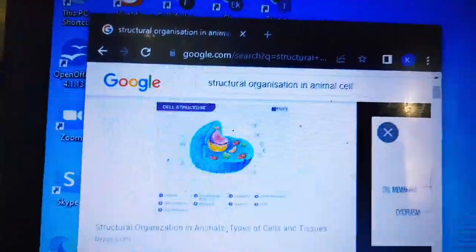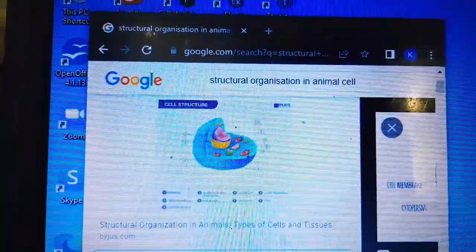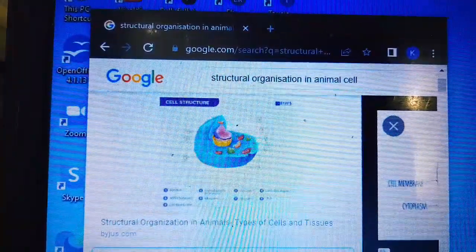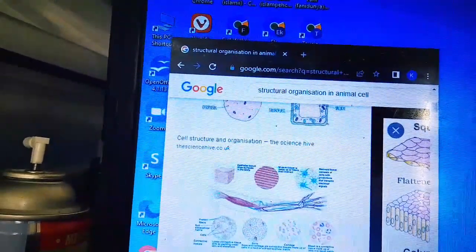When tissues group together to perform specific functions, they form organs. The animal tissues are divided into epithelial, connective, muscular, and nervous tissues.